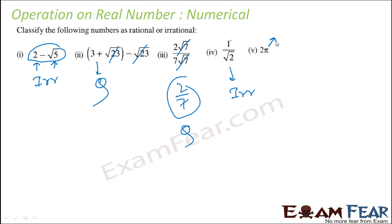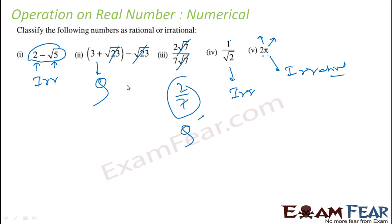This involves pi, and pi is irrational. You are multiplying an irrational number by the rational number 2, and in that case you get irrational. So the classifications are: irrational, irrational, rational, rational, rational, irrational.